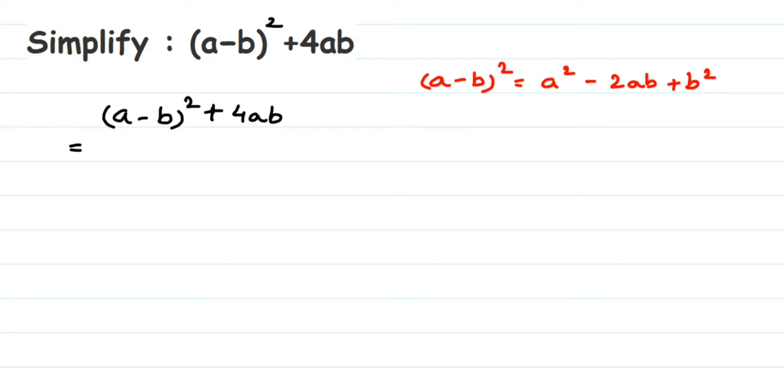In place of (a - b)², I'm going to write down a² - 2ab + b², and again we have this 4ab, so plus 4ab. This is equal to, now just solve the like terms.